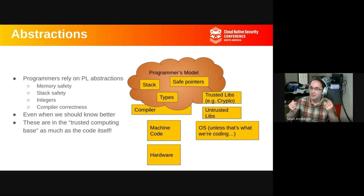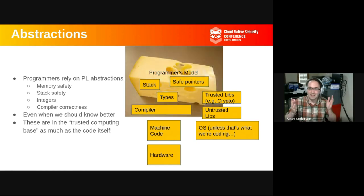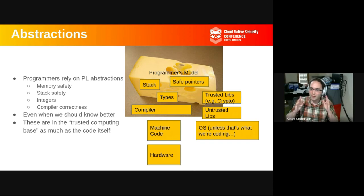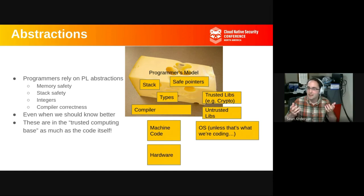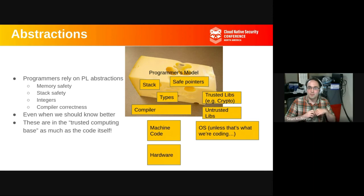I expect that if I write through a pointer to this block, I don't accidentally write into another block. That's an abstraction that makes it easier to write a program. But often those abstractions don't actually hold — the programmer's mental model of what's going on in the system has holes in it. A lot of CVEs come from the fact that someone was thinking in terms of a higher-level abstraction and missed the fact that underneath, there's a much lower-level, more concrete system doing something unexpected. The classic example is the buffer overflow — our buffers are not actually separate from one another.